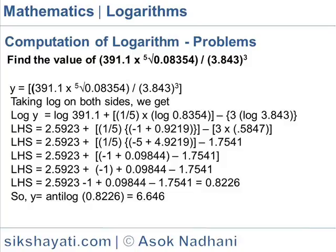So the left-hand side expression comes to 2.5923 plus one-fifth times, now we rewrite this minus 1 plus 0.9219 as minus 5 plus 4.9219 to make the mantissa positive, minus 3 times 0.5847. We can write 1.7541.